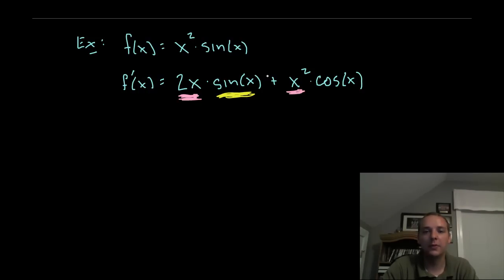So notice I just copied the first, I didn't actually differentiate the first, I just copied the first times the derivative of the second and the derivative of sine is cosine. So this whole thing would be the derivative of f.